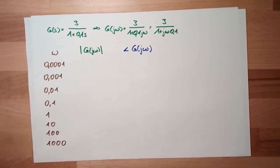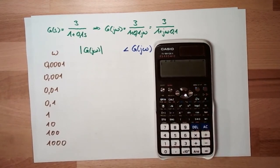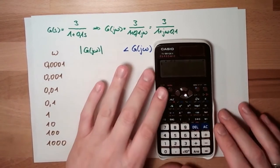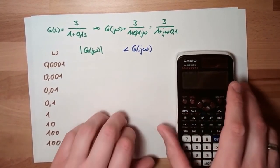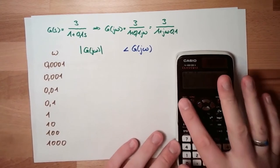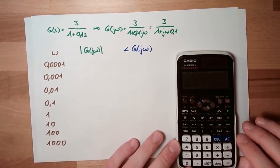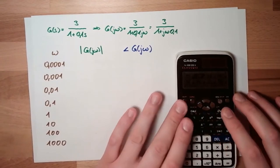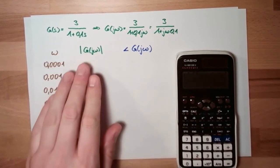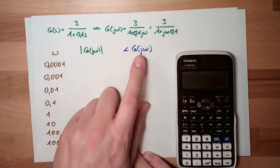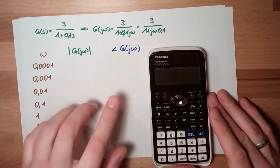If you have a fancy calculator like me, you can simply calculate this. We are changing to complex calculating. We want to have it in numbers — in absolute value and argument. So I simply have to enter the formula.